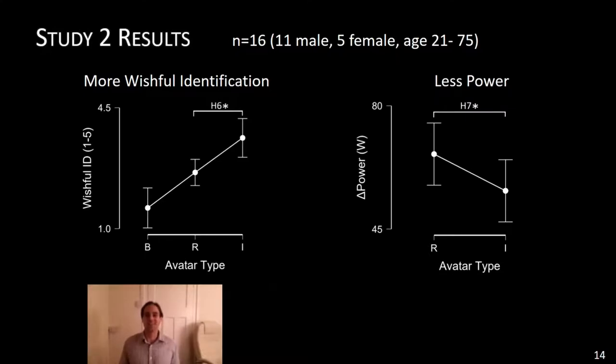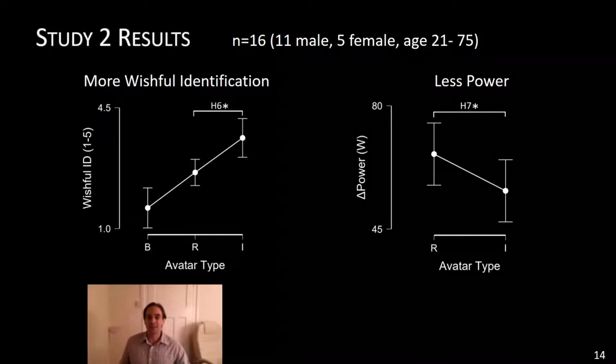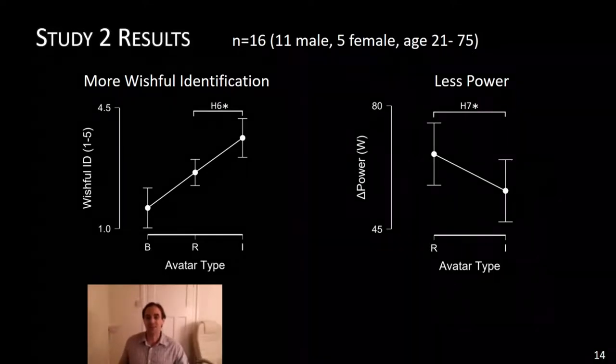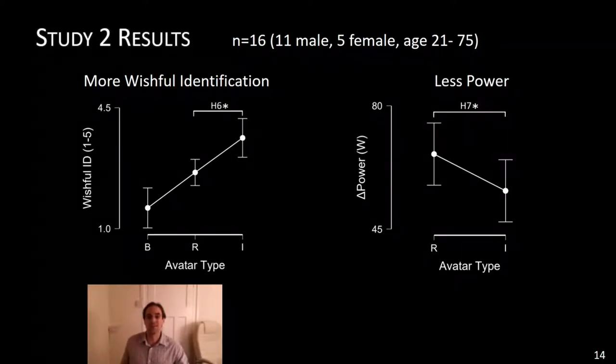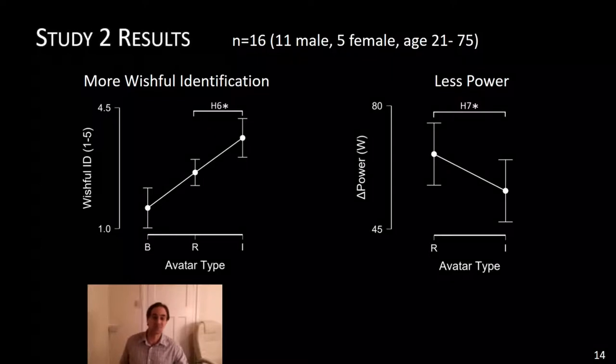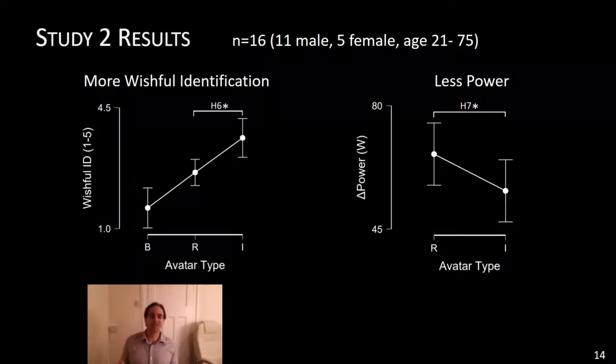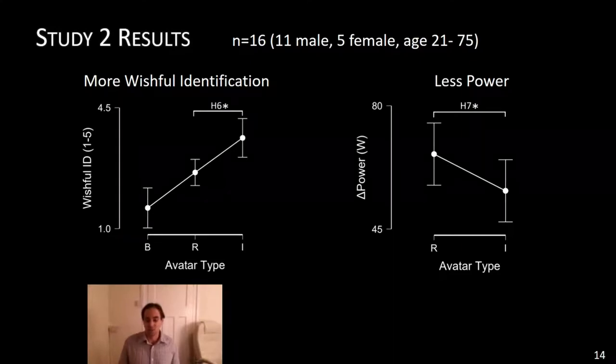Let's have a look. Less power. As you can see here, when racing against the idealized avatar, people exerted significantly less power. So they were slower than when racing against their realistic avatar. That's an interesting result. Avatar customization with realistic avatars seems to be really good, but going to idealized avatar actually makes them work less hard.